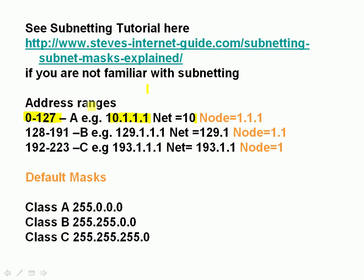Just a quick recap before we go into the worked examples. A class A address has an address range of 0 to 127, that's the first 8 bits, and uses the first 8 bits for the network and the remaining 24 bits for the node. An example address, 10.1.1.1, means it has a network address of 10 and a node address of 1.1.1. Same with the class B and class C here.